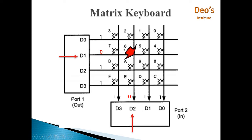So by this way we can identify that a key is pressed which is on interface of D1 row and D2 column, and that is nothing but the key number 6. So this is how the key is identified in matrix keyboard format.